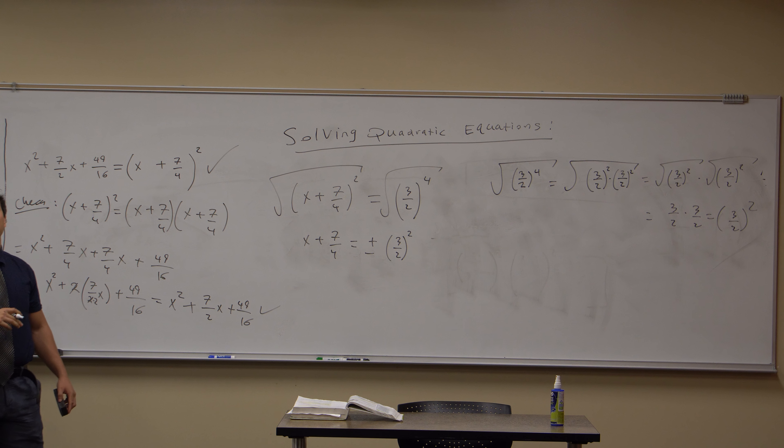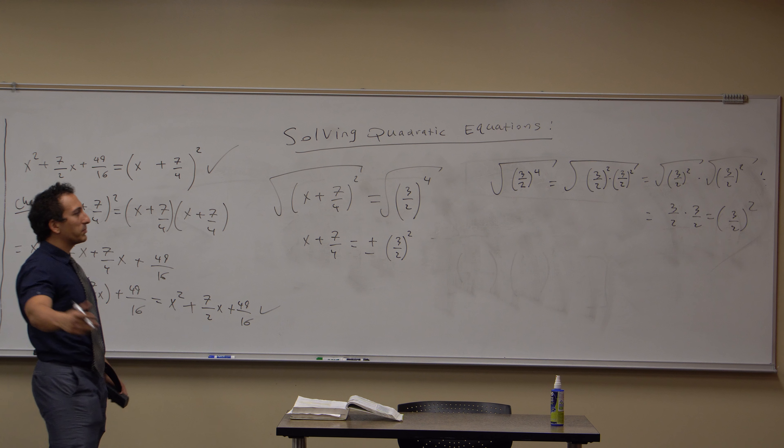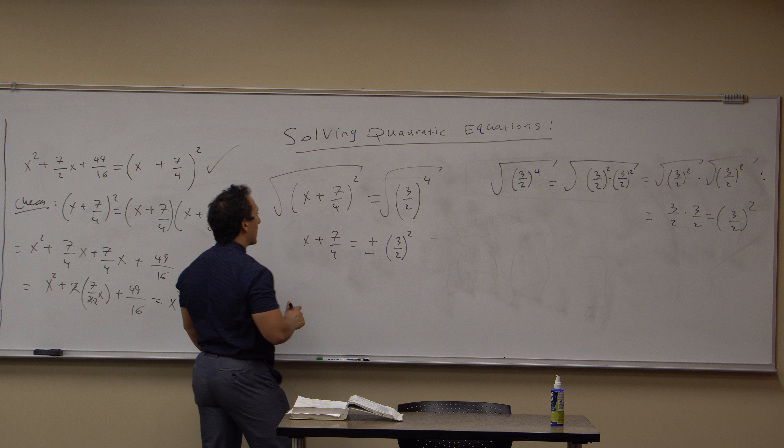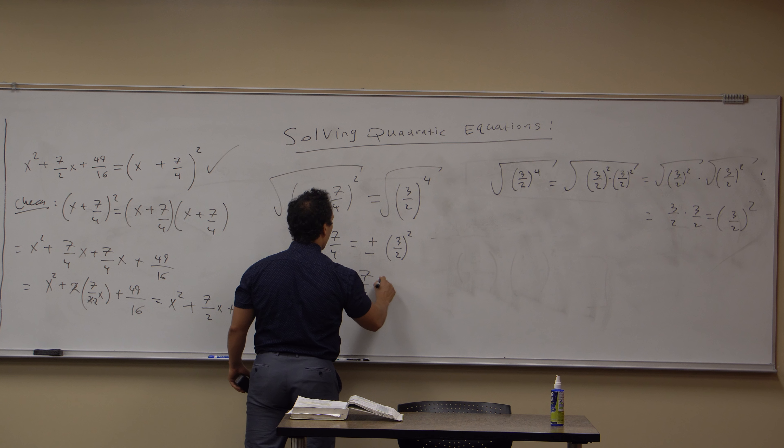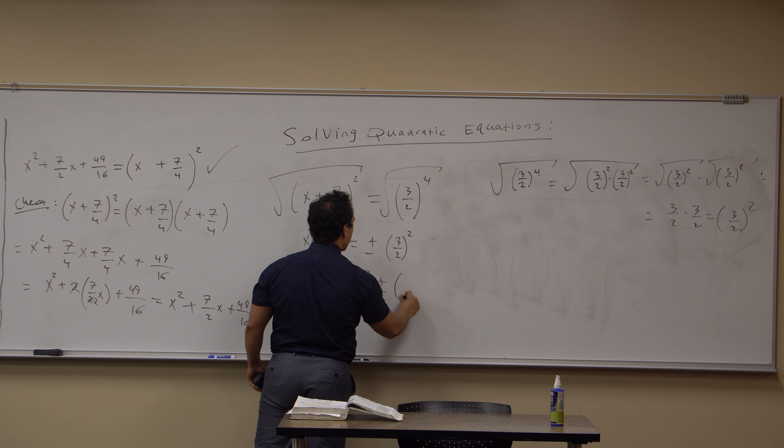The plus or minus is because we're taking an even root, 2 is even. So, it gets plus or minus. If it was a 4th root, we'd put plus or minus. If it was a 100th root, since 100 is an even number, it will be plus or minus. And so to solve for x, I get x = -7/4 ± (3/2)².